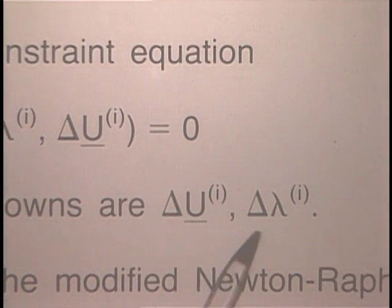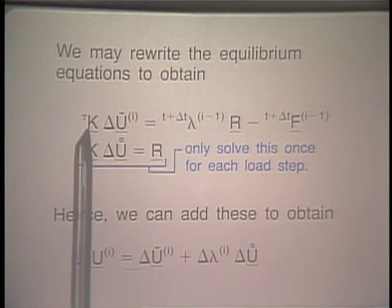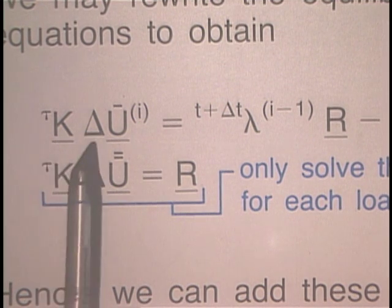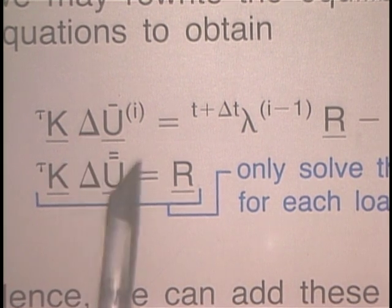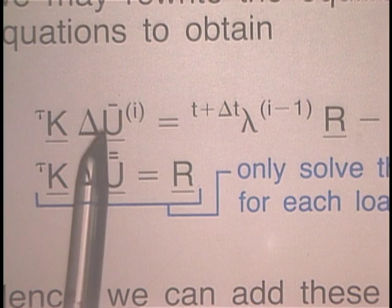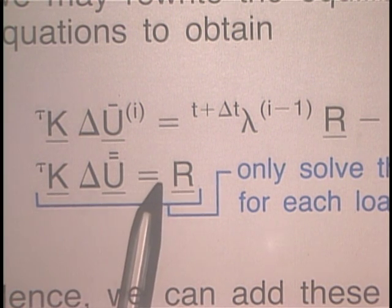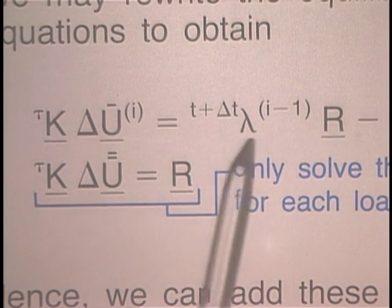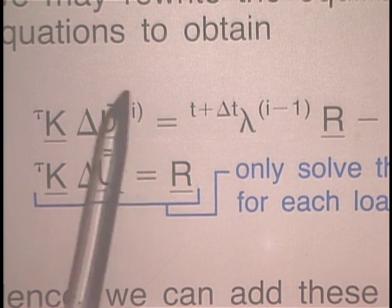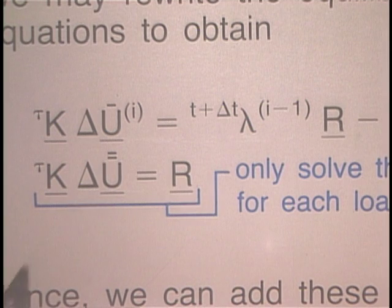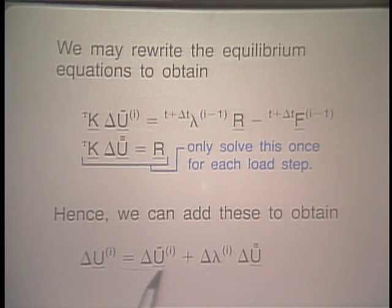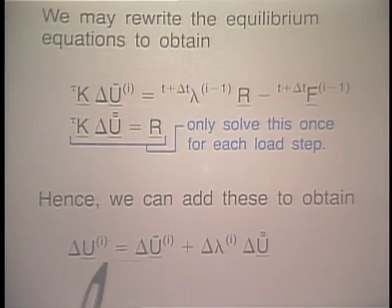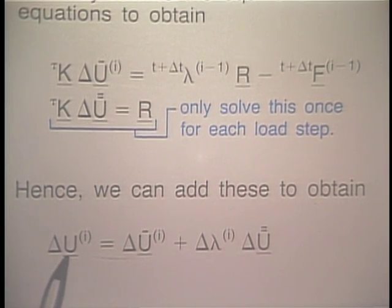To solve these equilibrium equations, we can rewrite them by splitting the equations on finite element displacements into two sets. Importantly, one of these equations does not involve δλ. Having calculated the two vectors from these separate equations, we can directly write δu as a combination involving δλ. This is the form of equation for δu that we will use in what follows.